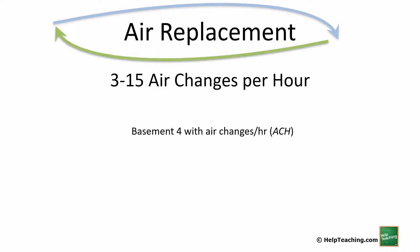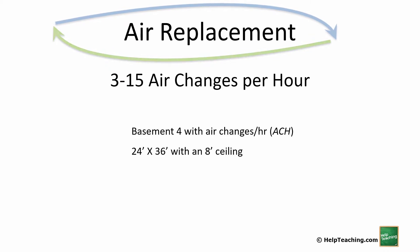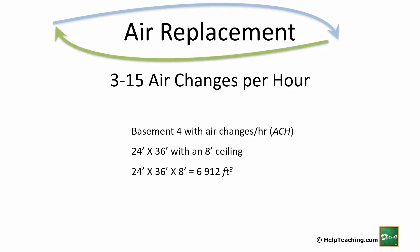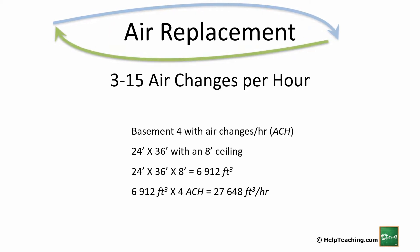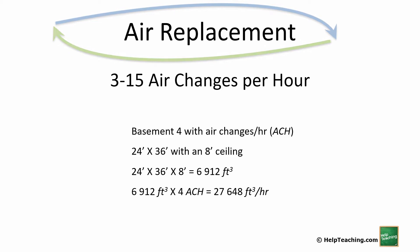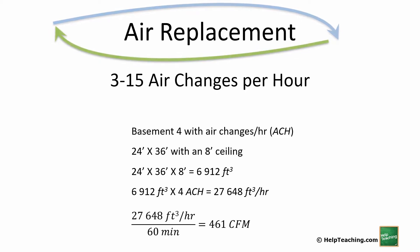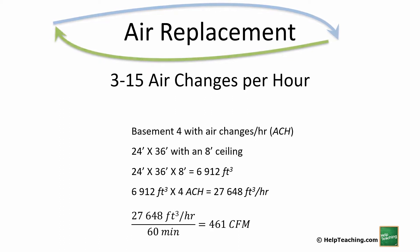Our first example is a basement with 4 air changes per hour. The basement is 24 by 36 feet with an 8-foot ceiling. To calculate the volume: length times width times height — 24 times 36 times 8 — gives us 6,912 cubic feet. We want to change that air four times in an hour, so we multiply by 4 and get 27,648 cubic feet per hour. Dividing by 60 minutes gives us 461 CFM — cubic feet per minute — which is the unit that pretty much all fans use.